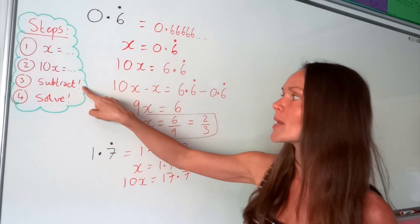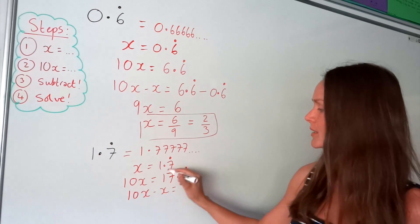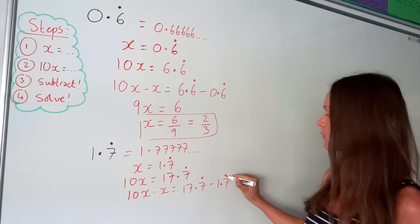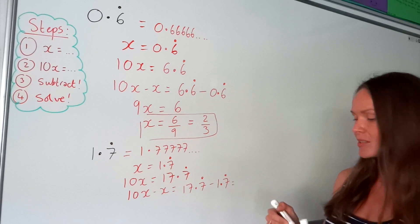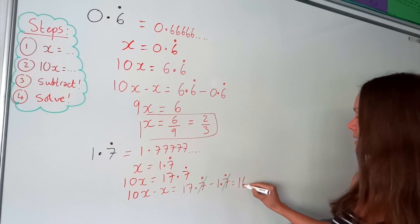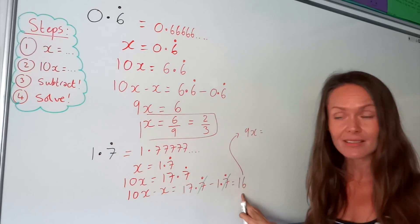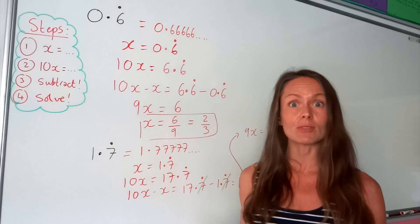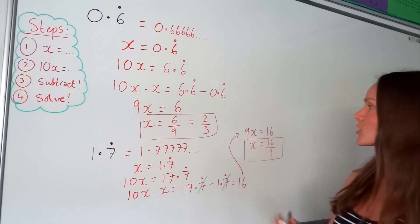Step number 3, just like before, we have to subtract — the larger x minus the smaller x. So we've got 10x minus 1x, which is 17.7 recurring minus the original number 1.7 recurring. We're doing this to get rid of those recurring decimals. The recurring decimal parts cancel, and we also do 17 minus 1, which leaves me with 16. So 10x minus 1x is 9x, and 9x equals 16. The final step is to solve: dividing by 9 on both sides gives x equals 16 over 9, and we can't simplify this fraction.